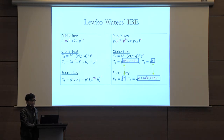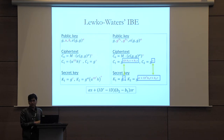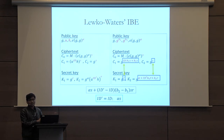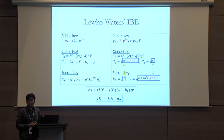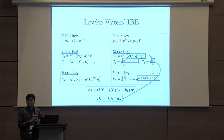If we pair c1 with k1 and c2 with k2, and divide one from the other, this is what we get in the exponent. And if id is equal to id', then the second term disappears, and you are left with alpha times s only. We can then use this alpha·s to remove the blinding factor in the first component of the ciphertext and recover the message.